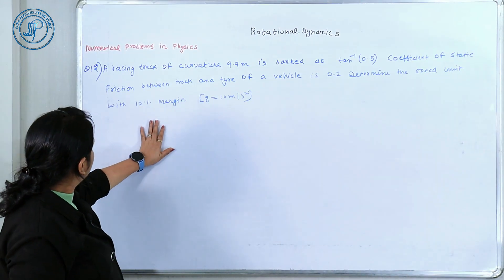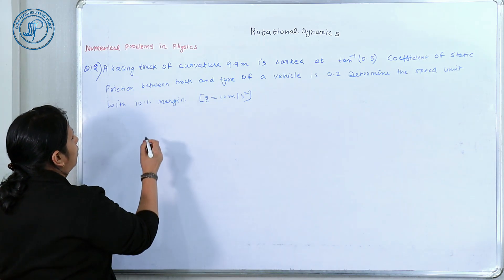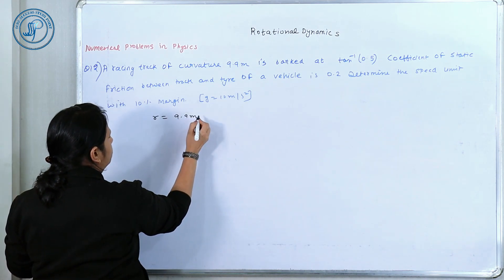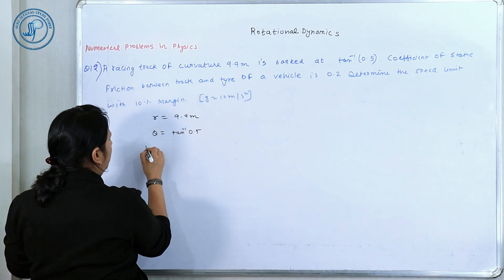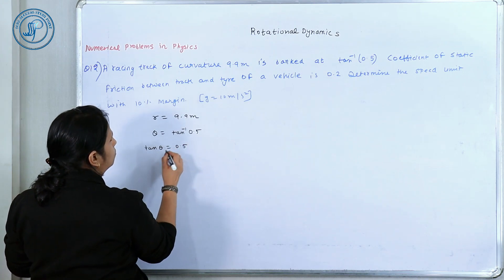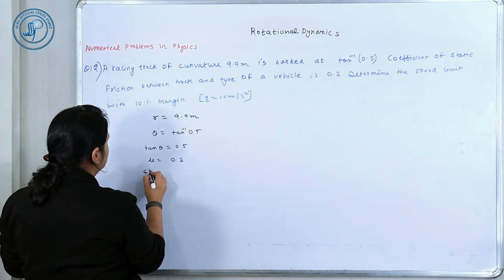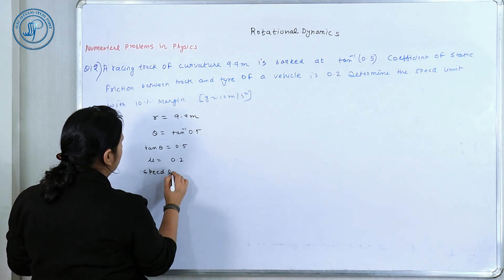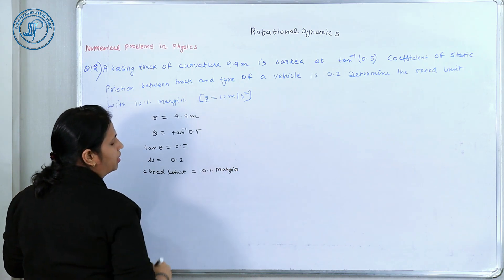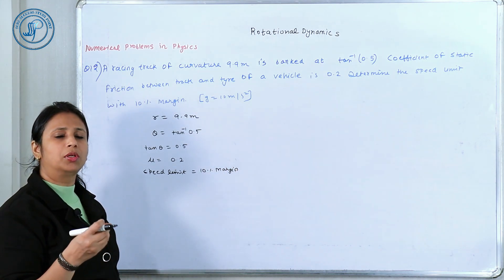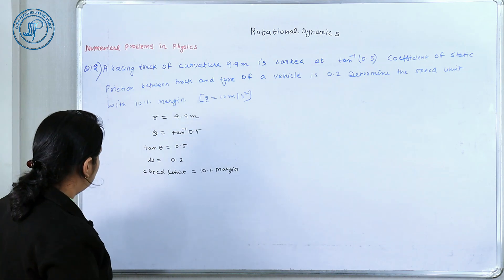Starting the next question: a racing track of radius of curvature 9.9 meters is banked at angle θ where tan θ = 0.5. The coefficient of friction is 0.2, and there is a speed limit with a 10% margin — meaning the minimum speed allowed can be up to 10% more than the calculated minimum, and similarly for maximum speed.